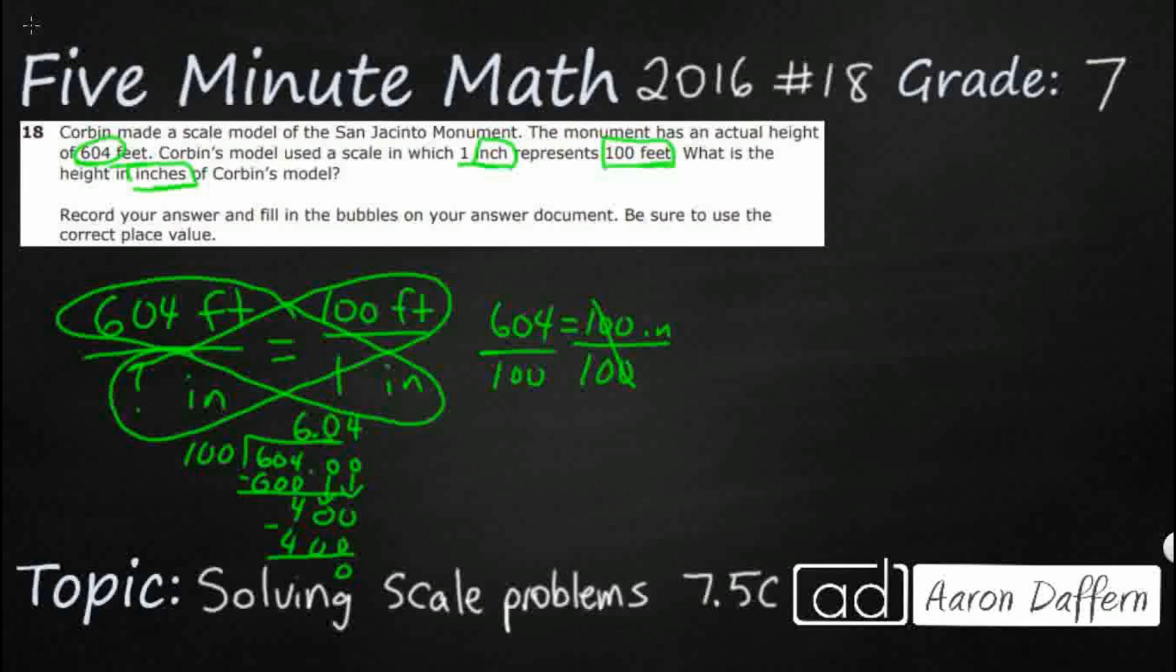Now if you know that multiplying by 10 or 100 just moves the decimal to the right or adds zeros, dividing by 10 or 100 moves the decimal to the left or removes zeros. We can take our decimal, move it over once, twice, because there are two zeros here. And we get that same answer. So the scale model is going to have a height of 6.04 inches.